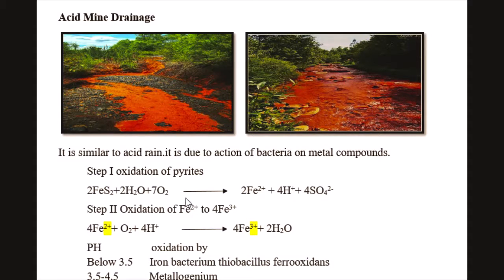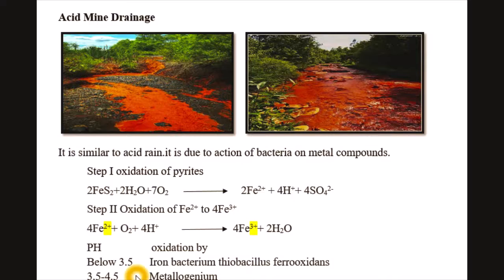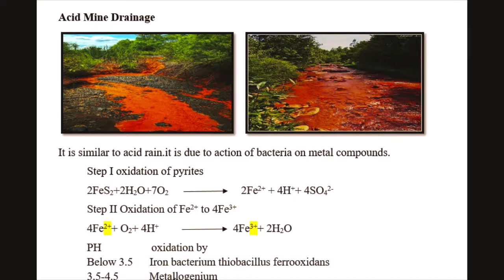This oxidation is catalyzed by iron bacterium Thiobacillus ferroxidans, or by Metallogenium depending on the pH. If pH is below 3.5, oxidation is catalyzed by Thiobacillus ferroxidans. If pH is in the range of 3.5 to 4.5, the oxidation is catalyzed by a variety of Metallogenium.